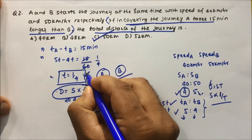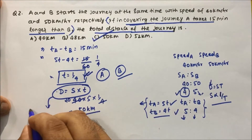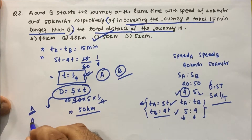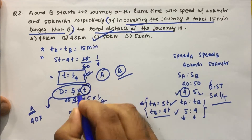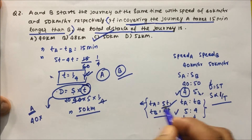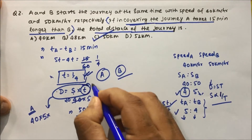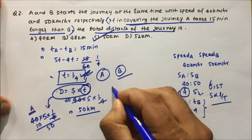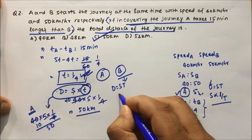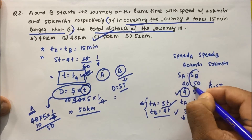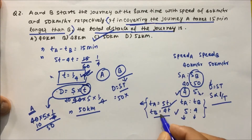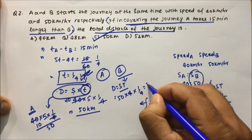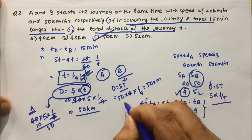Let me explain once more. d = s × t. For A: speed = 40, time of A = 5t = 5 × (1/4), so distance = 40 × 5/4 = 50 km. We can verify using B: distance = speed of B × time of B = 50 × 4t = 50 × 4 × (1/4) = 50 × 1 = 50 km. Both give the same answer of 50 km.